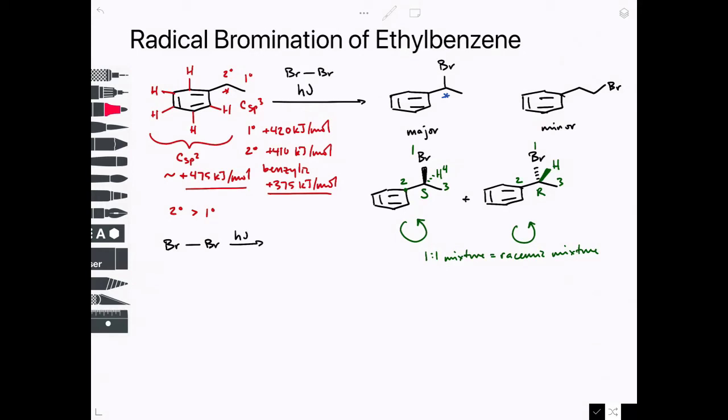So when you apply light or heat to a halogen, such as bromine, you homolytically cleave the molecular halogen. So in this case, we're getting two bromine radicals. That bromine radical, as we said, is going to look for the weakest CH bond to break. So let's go ahead and draw that in.